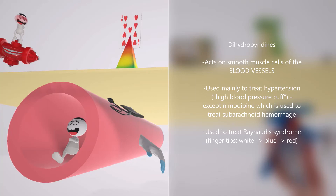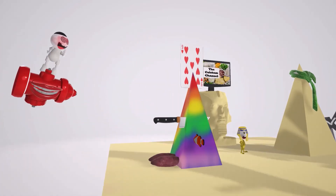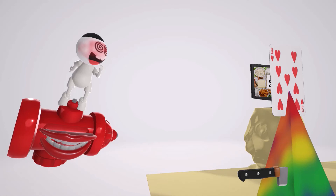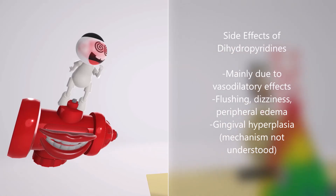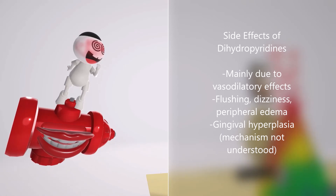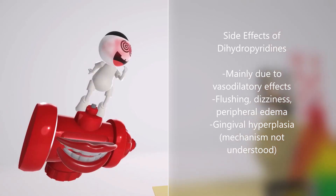Before we talk about the non-dihydropyridines, let's look at this guy who kind of looks like he's high — really excited about the escape from Egypt. He helps us remember potential side effects in a patient taking dihydropyridines. The side effects are primarily caused by the vasodilatory effects. This includes flushing — we can see the flushing in his face. We can tell from his eyes that he's very dizzy — dizziness is a side effect. He's riding on a hydrant squirting water, which reminds us of peripheral edema. Finally, there's a random mouth with a lot of gums — gingival hyperplasia is an adverse effect of the dihydropyridines, and as we'll see, it's also a side effect of the non-dihydropyridines.